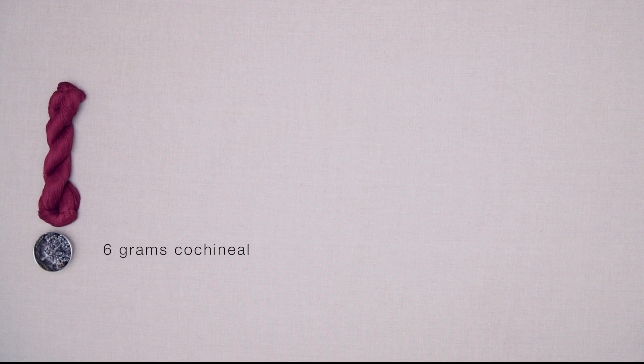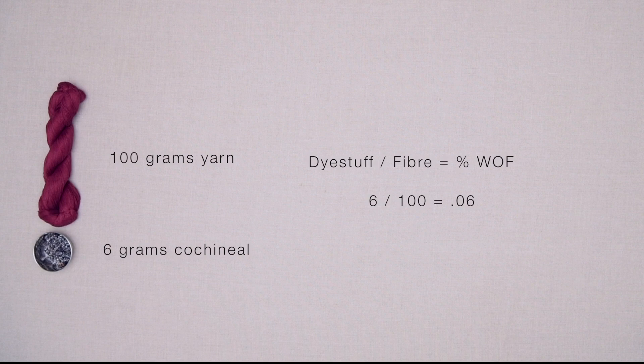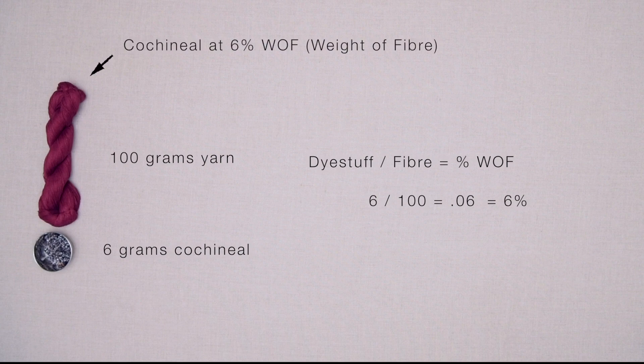How much dye did I use to get my favorite color? I check my notebook and see that I used 6 grams of cochineal to dye 100 grams of yarn. I always weigh my items dry, not wet. So weight of dyestuff divided by weight of fiber gives me a percentage: 6 divided by 100 equals 0.06, or 6%. A dyer would say: to get my favorite color, I used cochineal at 6% weight of fiber. And that 6% tells me not only what I did, but what I need to do to get the same color on any amount of the same fiber.